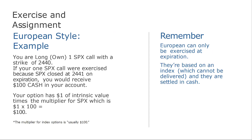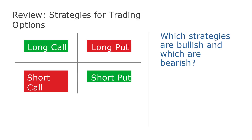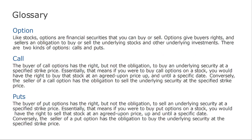For European style: you buy one contract at a strike price of $2,440. If the price is even one dollar above, you can exercise it and gain $100 — remembering that each contract is 100 shares. European options settle in cash and can only be exercised at expiration. For basic strategies: bullish — for the buyer it's a long call, for the seller it's a short put. Bearish — for the buyer it's a long put, for the seller it's a short call.